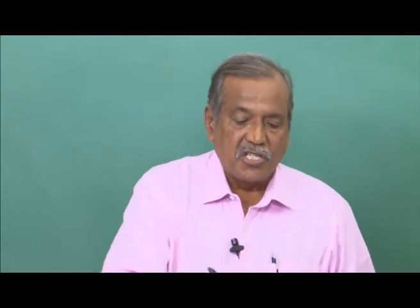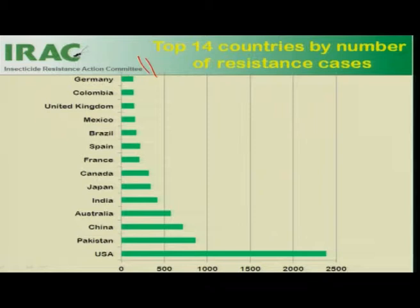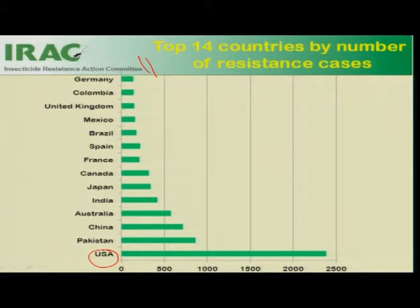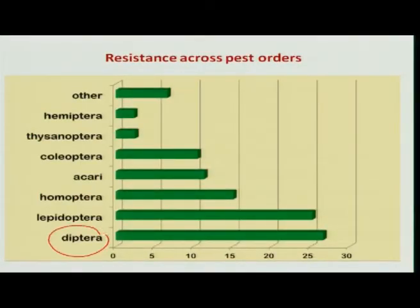The IRAC — Insecticide Resistance Action Committee — has compiled the top 14 countries where cases of insecticide resistance have been reported. The USA dominates with 2,400 species of insects reported having resistance to various insecticide groups, followed by Pakistan, with India ranking fifth having around 450 species showing resistance. In terms of insect groups, Diptera recorded the maximum number of species having shown resistance, followed by Lepidoptera and Homoptera.